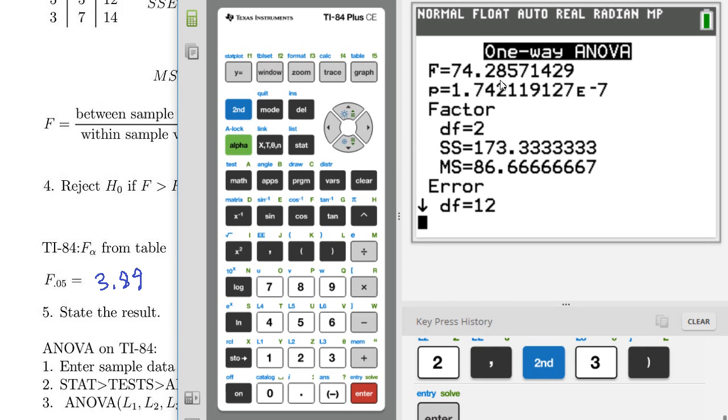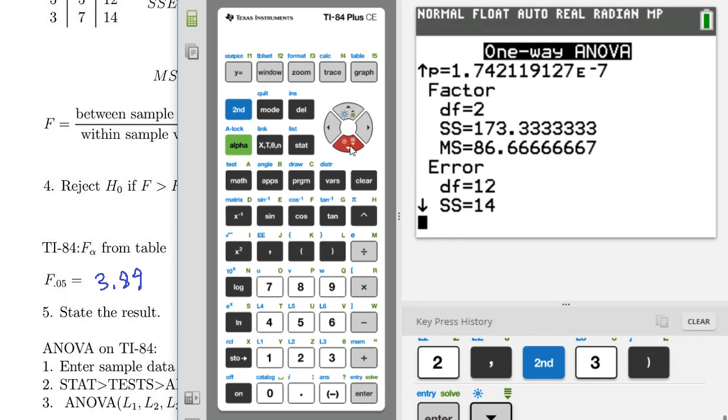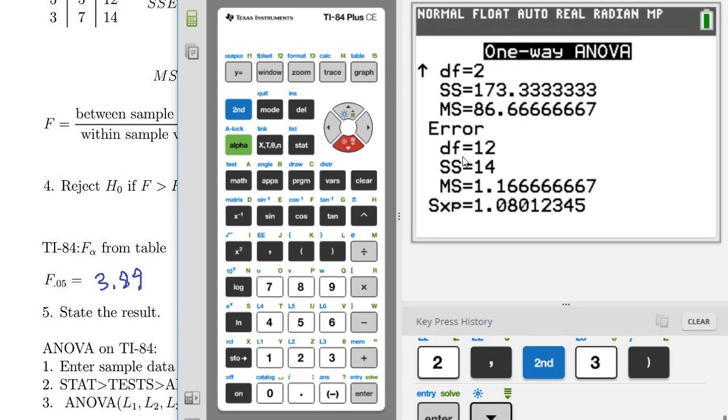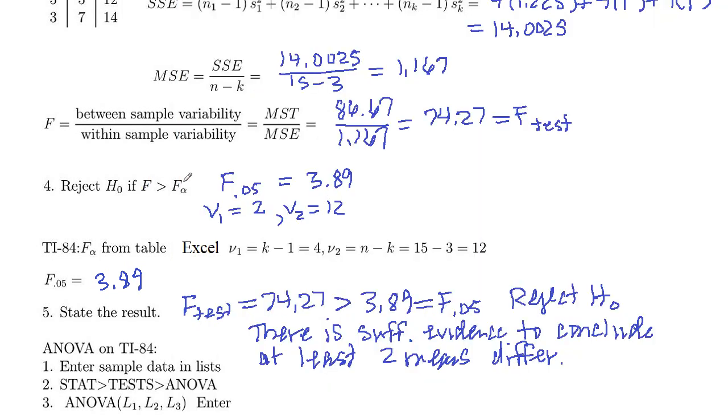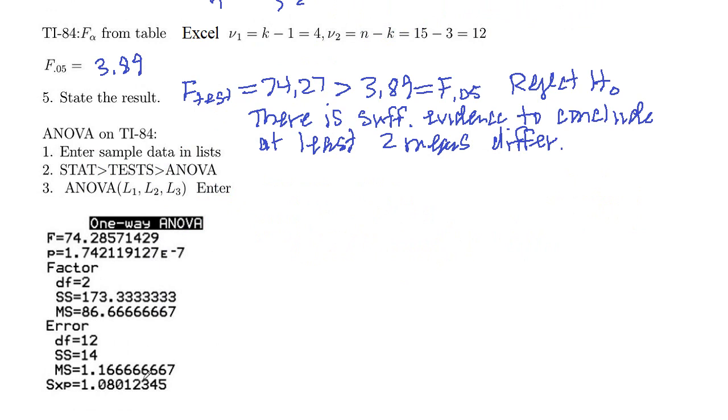And so you see there is our test statistic. It actually calculated a p-value for us also. Degrees of freedom for numerator, there's our 173.3 sum of squares and mean square error. And if you scroll down here, degrees of freedom denominator, sum of squares and mean square. And then they also give us SXP. I'm not sure what that is. But that is this data here.